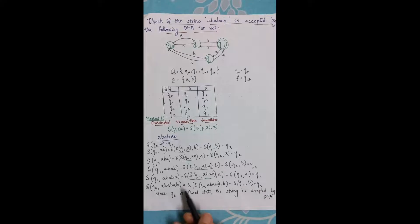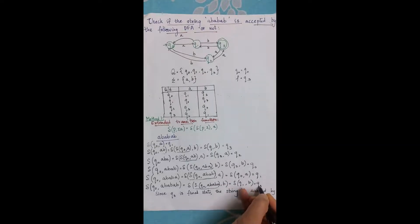I write the complete string in the last line, which I get from my previous line, which is nothing but q1. Delta of q1 comma b gives me q3. Since q3 is the final state, finally I reach q3 and q3 is the final state, so the string is accepted by DFA.